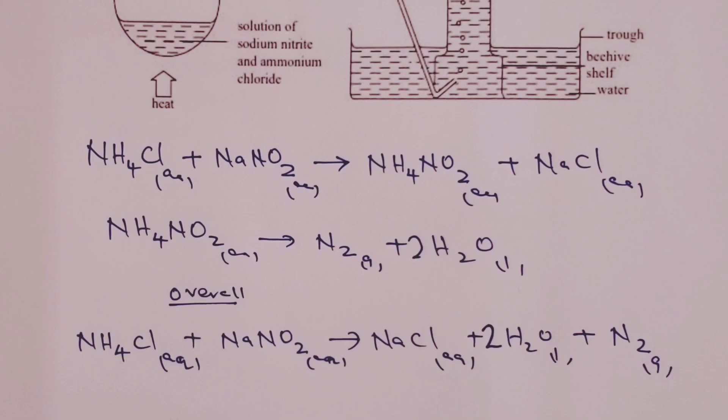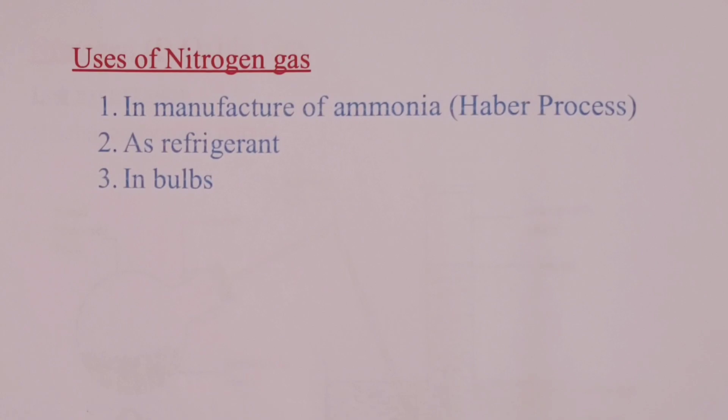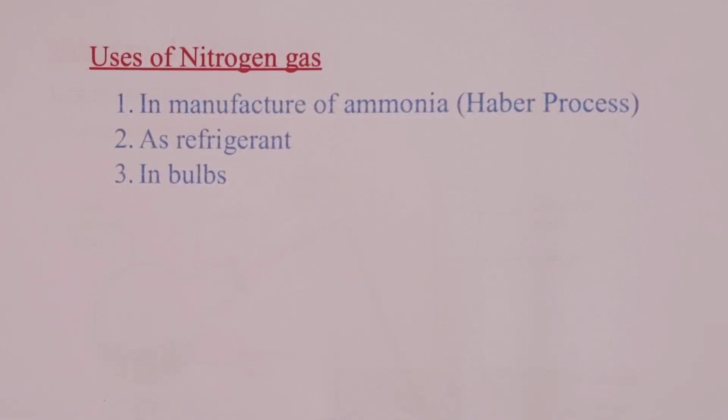Before we move to nitrogen (I) oxide, let us have a look at uses of our gas, nitrogen. Nitrogen is mainly used in the manufacture of ammonia in the Haber process.